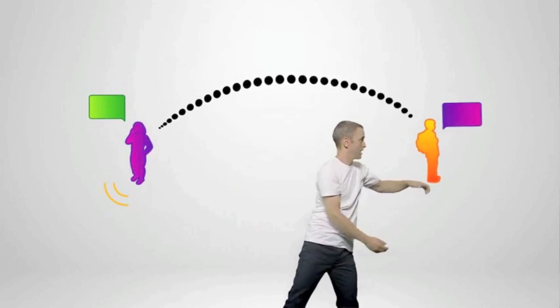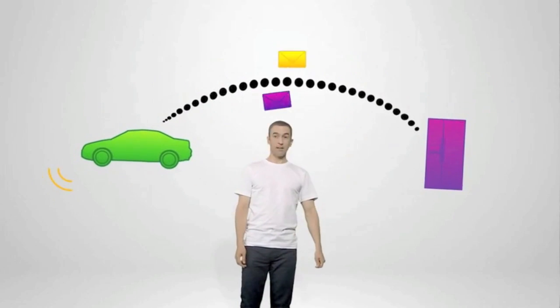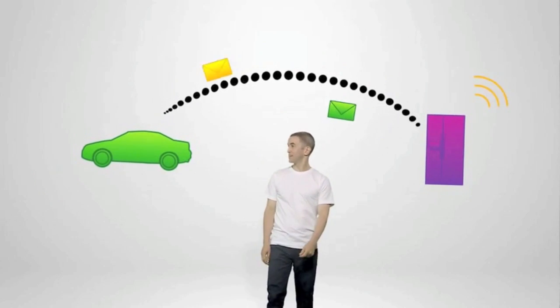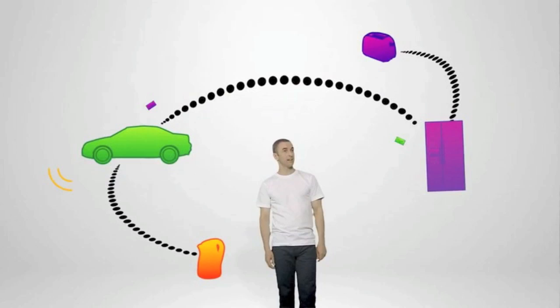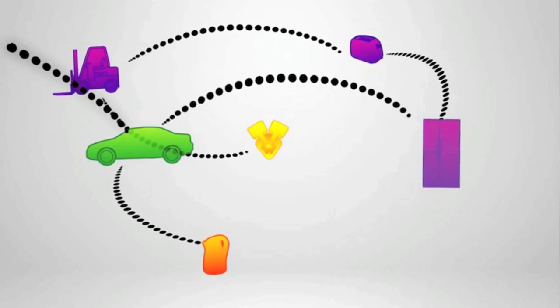The future of communications will be about all kinds of things speaking to each other through the internet, what the experts call the Internet of Things. Every coffee maker, toaster, car engine, and goods pallet could be equipped with a low-cost LTE chip that will connect it to an ever-growing network.